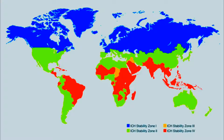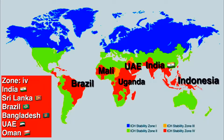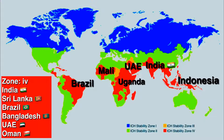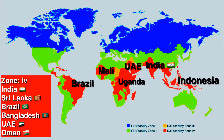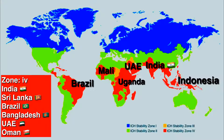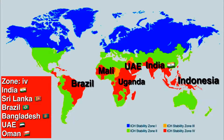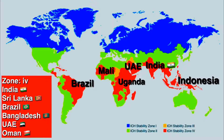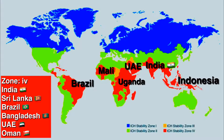The last zone, Zone 4, includes India — described as the most beautiful country in the world — along with its neighboring countries: Sri Lanka, Pakistan, Indonesia, Bangladesh, UAE, and Oman.